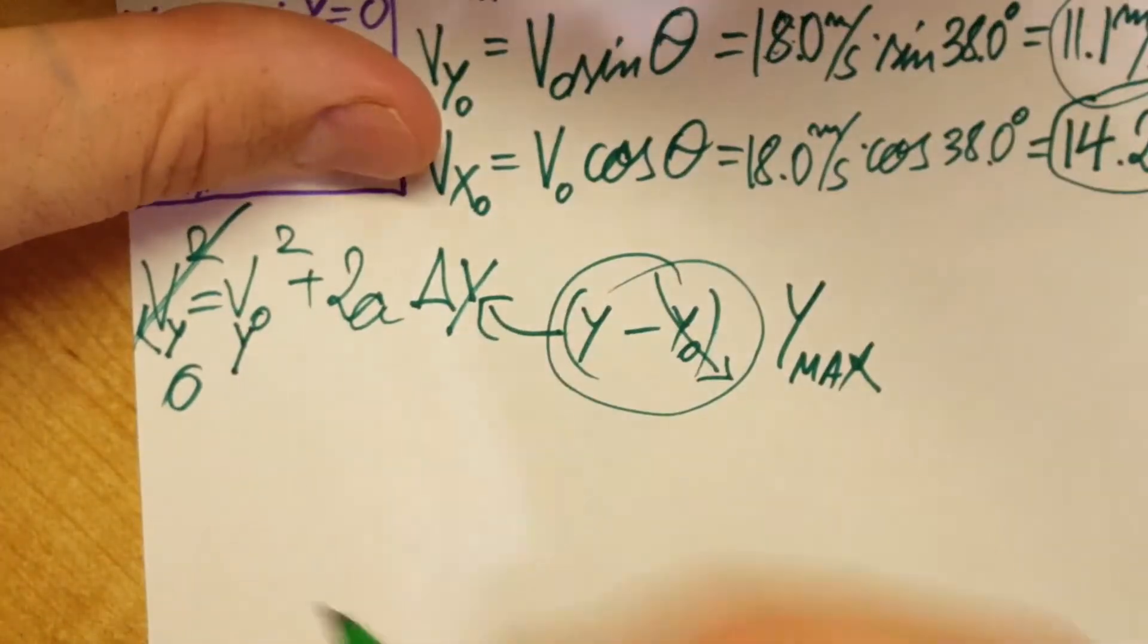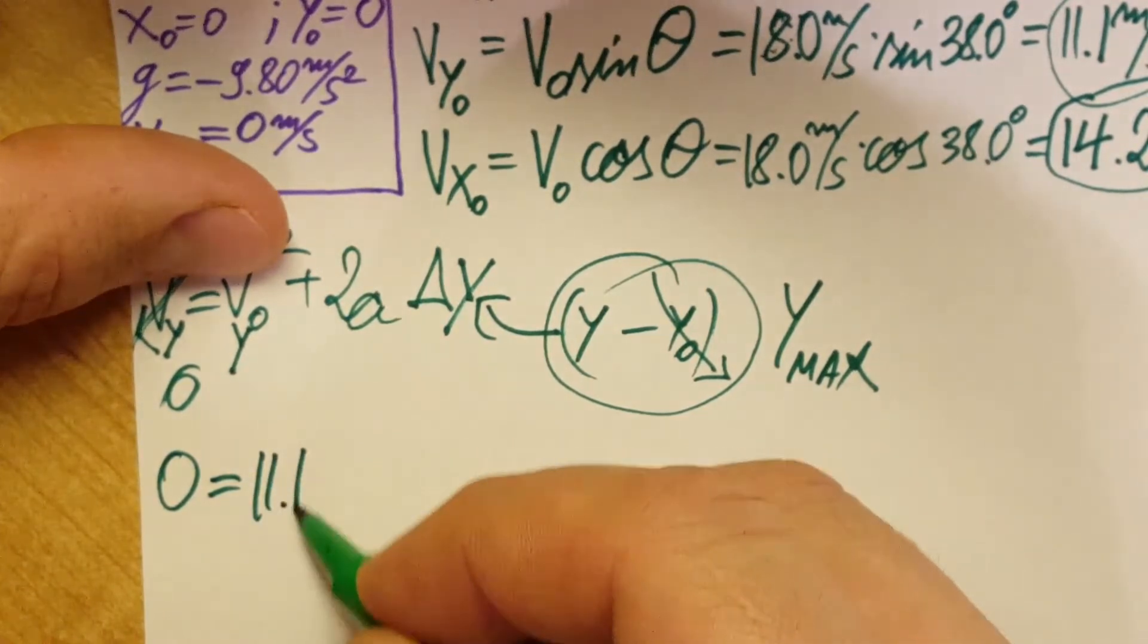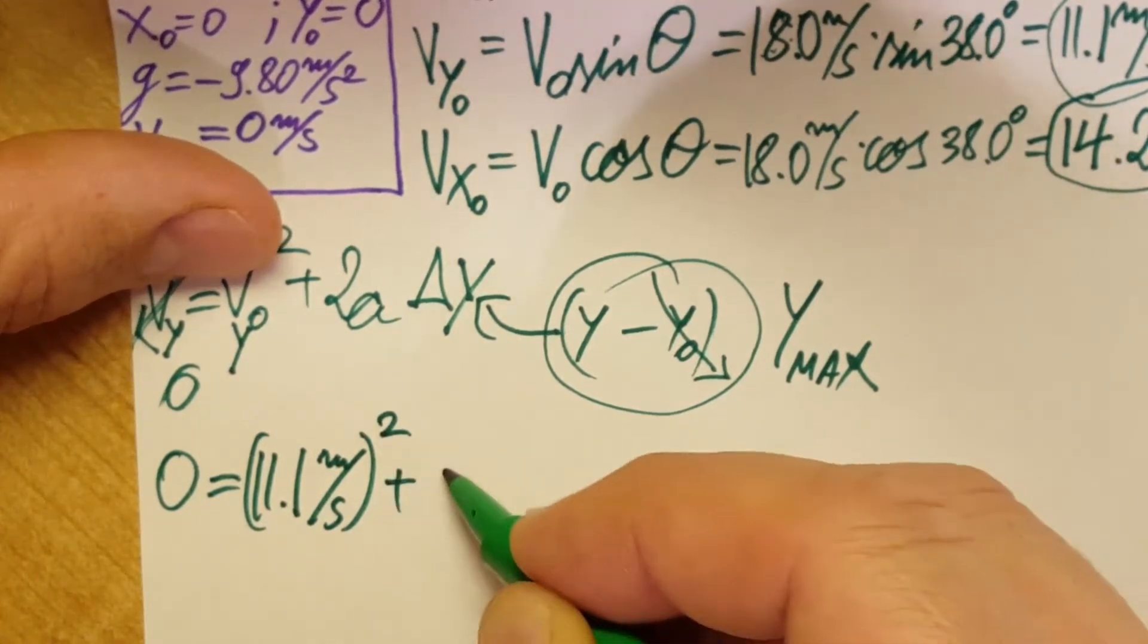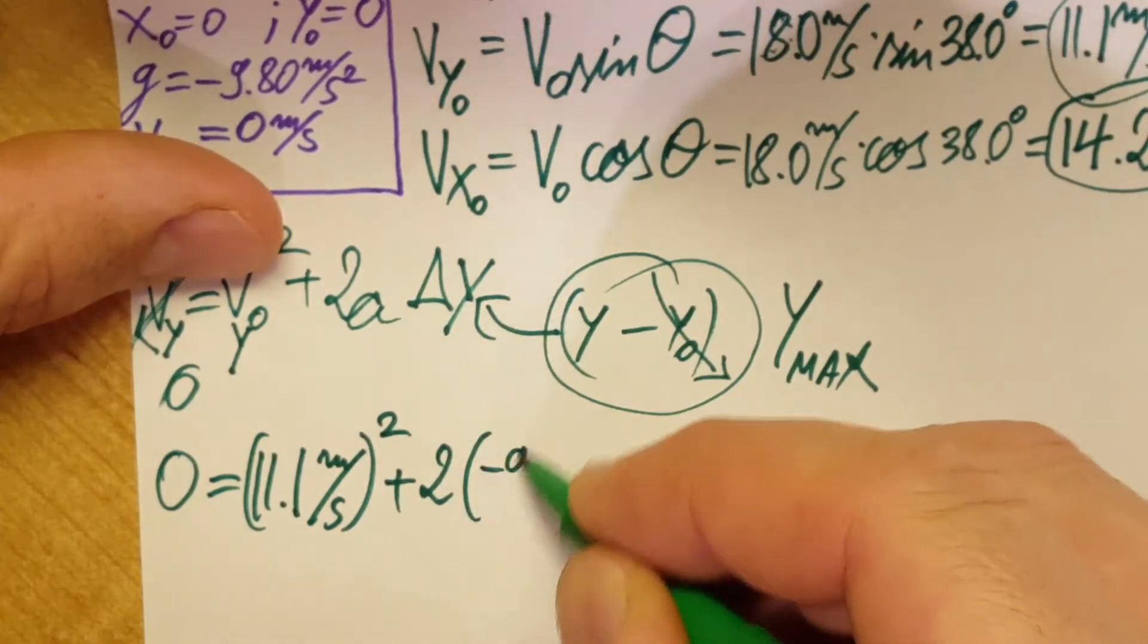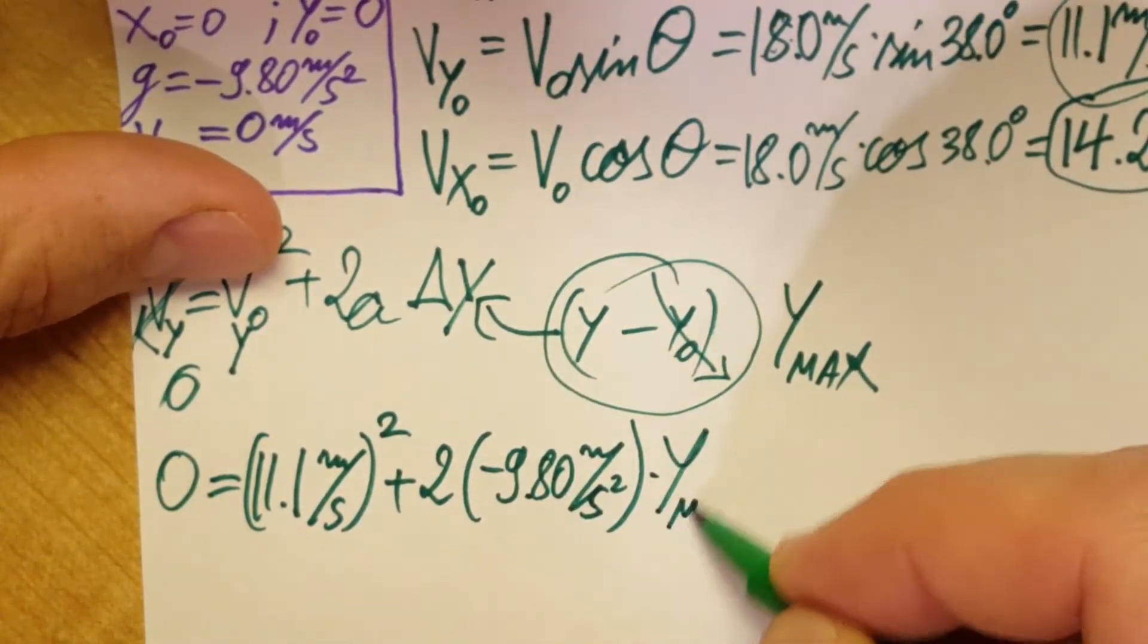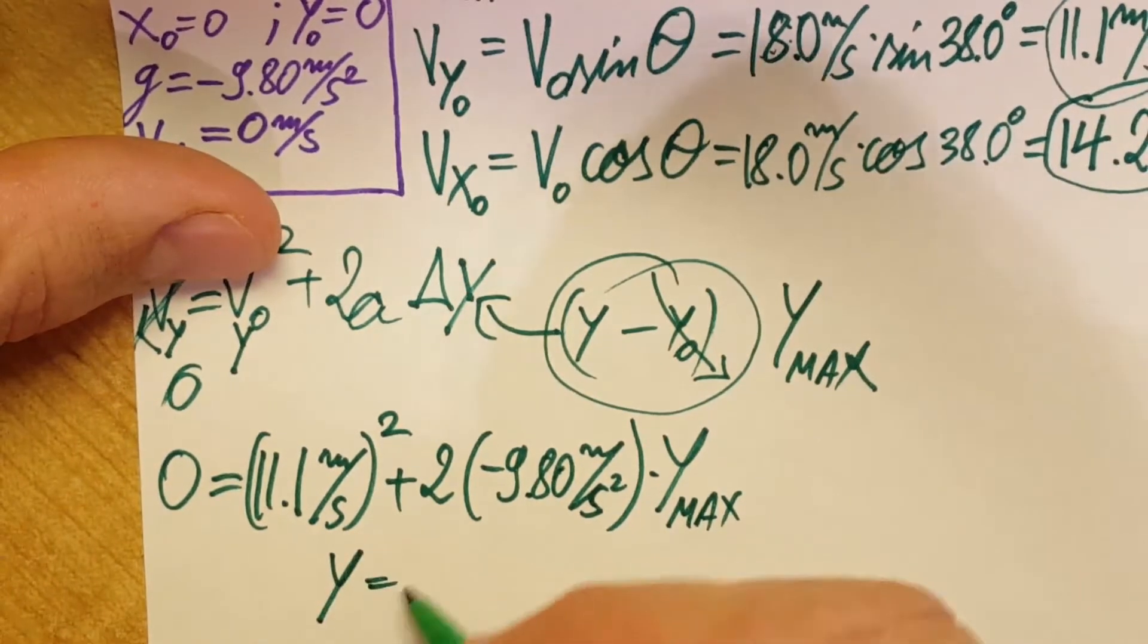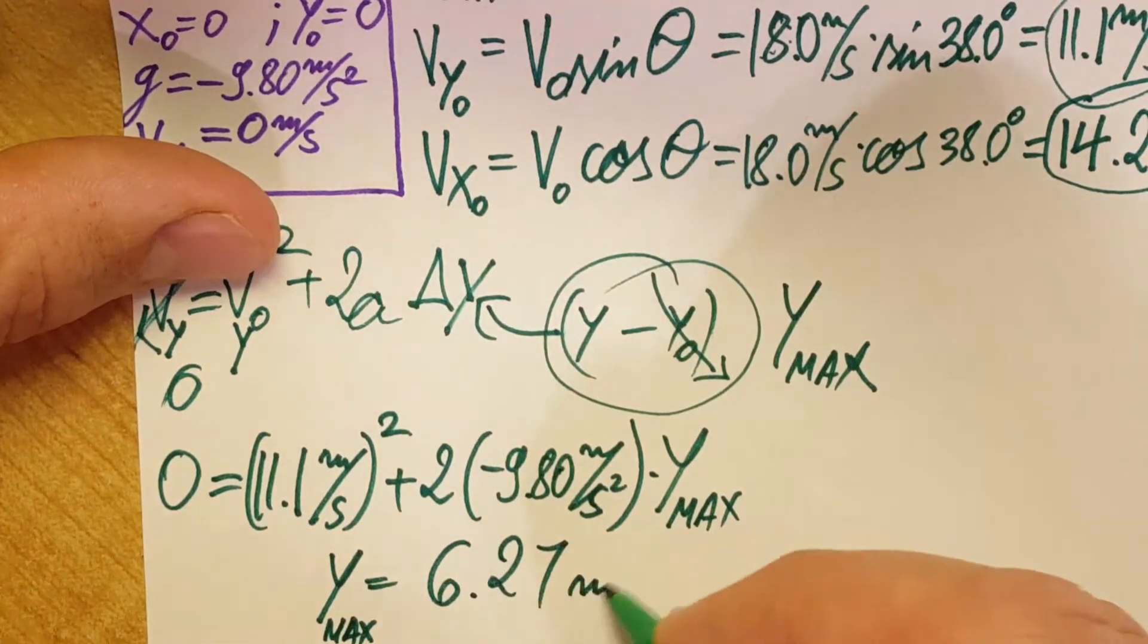This number we know, so we can go ahead and plug it in. So zero equals 11.1 meters per second squared plus two times our acceleration is gravity. We can go ahead and plug it in: -9.8 meters per second squared times y_max. We solve for y_max and with a calculator we find the value which is y_max equals 6.27 meters.